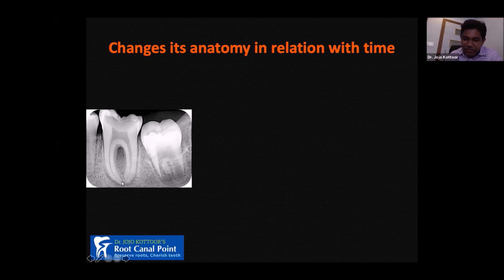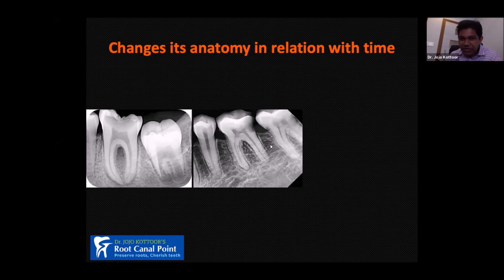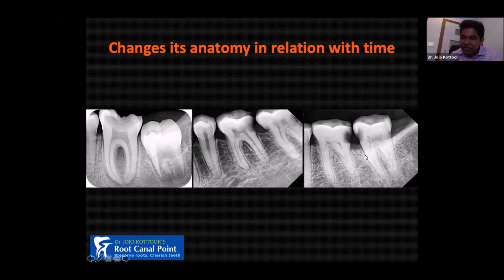If you take a mandibular first molar for a patient around 50 years old, on the contrary with the first x-ray, the distal root canal is slightly narrow and the mesials are differentiated into mesiobuccal and mesiolingual. But when you go to a patient more than 60 years old, you can see severe attrition, and there is hardly any pulp chamber visible. The distal canal and mesial canal also are not visible properly. This radiograph highlights the fact that root canal anatomy is dynamic — it changes over time.